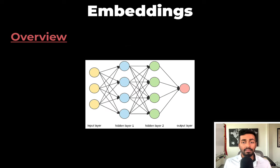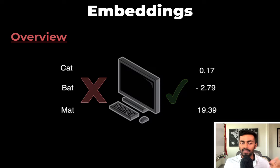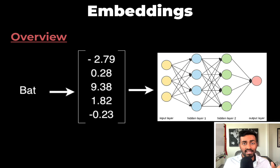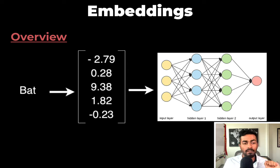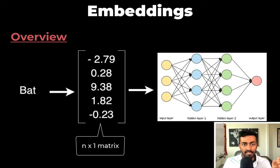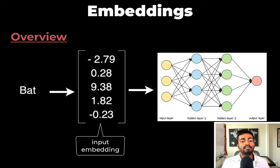Let's talk about embeddings in the context of neural networks. Computers and neural networks don't understand words — they understand numbers. Hence, before passing any data into the neural network, it needs to be converted into some numerical representation. This data is converted into vectors, and these vectors are basically n×1 matrices. And these vectors are also known as an input embedding.